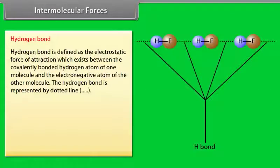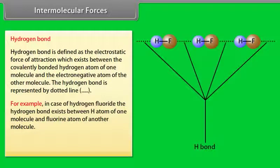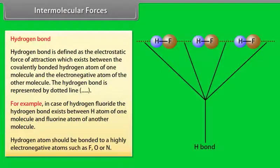Hydrogen bond: the hydrogen bond is defined as the electrostatic force of attraction which exists between the covalently bonded hydrogen atom of one molecule and the electronegative atom of the other molecule. The hydrogen bond is represented by a dotted line. For example, in hydrogen fluoride, the hydrogen bond exists between the H atom of one molecule and the fluorine atom of another molecule. The hydrogen atom should be bonded to a highly electronegative atom such as fluorine, oxygen, or nitrogen. Larger the electronegativity of the other atom, greater is the strength of the hydrogen bond.